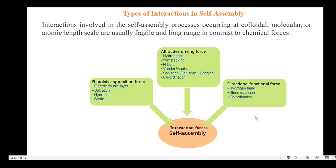The next topic is the different types of interaction in self-assembly. A self-assembly system consists of a group of molecules, where multiple non-covalent interactions initiate the self-assembly process through different pathways. The self-assembly process occurs at colloidal, molecular or atomic length scale, and the interactions are usually fragile and long-range in contrast to chemical forces. The various interaction forces involved are: attractive driving force, repulsive opposition force, and directional functional force.